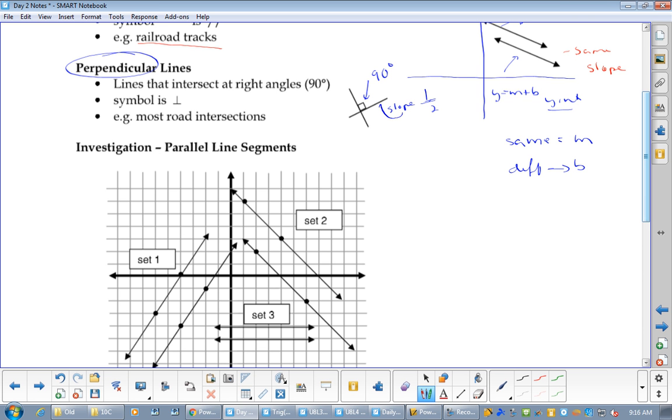Anyone want to wager a guess on the other slope? Raven? No. You got half right. It would definitely be negative, would it not? No doubt about that. Yeah. How did you come up with that? Did you watch the video? How do you think about it? It's always the negative reciprocal, always opposite sign and reciprocal.